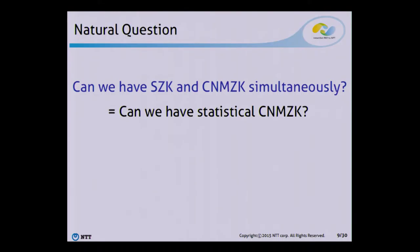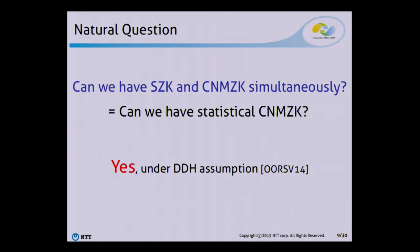But since it is very strong, it's a very hard task to achieve statistical concurrent non-malleable zero-knowledge. And in last year, in a beautiful work by Orlandi, Ostrowski, Rao, Sahai, and Visconti, it was shown that the answer to this question is yes. In particular, they showed that statistical concurrent non-malleable zero-knowledge argument can be constructed under the DDH assumption.